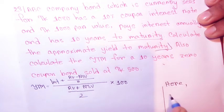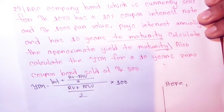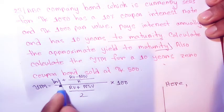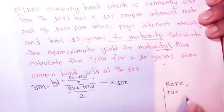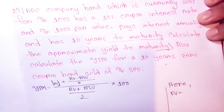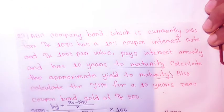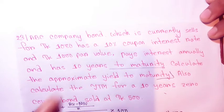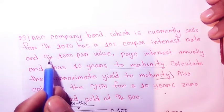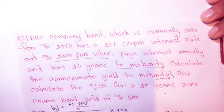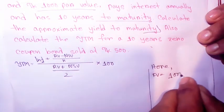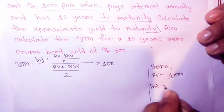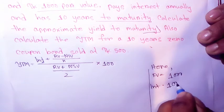The interest amount, the face value - the problem states the face value is 1000 taka. The face value is where the interest is calculated. It's 100 because of the face value, so the interest calculation...